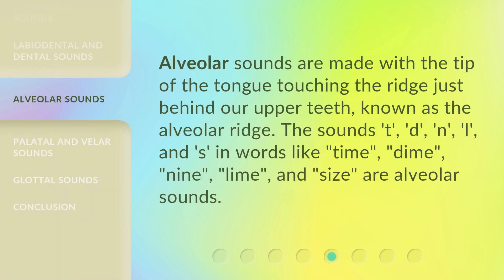Alveolar sounds are made with the tip of the tongue touching the ridge just behind our upper teeth, known as the alveolar ridge. The sounds "t," "d," "n," "l," and "s" in words like "time," "dime," "nine," "lime," and "size" are alveolar sounds.